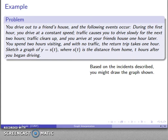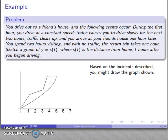Based on the incidents described, you might draw the graph looking something like this. We drive out, we do some stuff, we drive out, and then we return home. Well, it's not the right graph. Why isn't it?